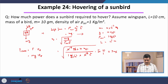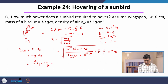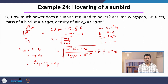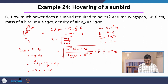Then the power is approximately: 10⁻² kg × 10 m/s² × 3 m/s. You can verify the dimension is watts (joules per second). This comes out to about 0.3 watts, or 300 milliwatts.